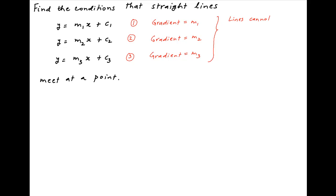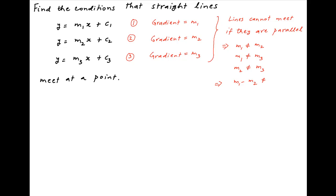Now these three lines cannot meet if they are parallel. It therefore follows that m1 should not be equal to m2, m1 should not be equal to m3, and m2 should not be equal to m3. It therefore follows that m1 minus m2 should not be equal to 0, m3 minus m1 should not be equal to 0, and m3 minus m2 should not be equal to 0.